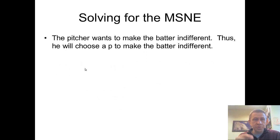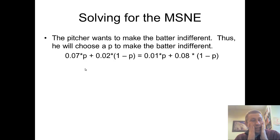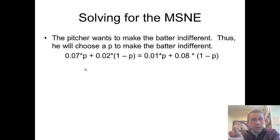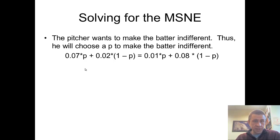So the pitcher chooses the probability P to make the batter indifferent. You just set those two equations equal to each other and solve — this is just algebra. Some common errors come from mixing up the expected value for the hitter and forgetting that it's the pitcher who controls the probability P. A lot of other errors are simple algebra errors, so be careful and take your time on this algebra — it's easy to make a mistake.